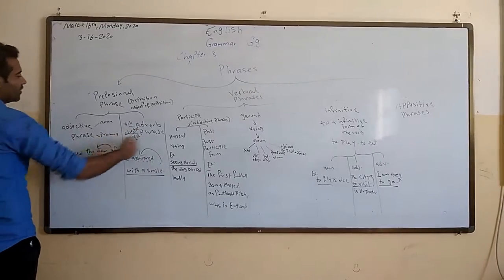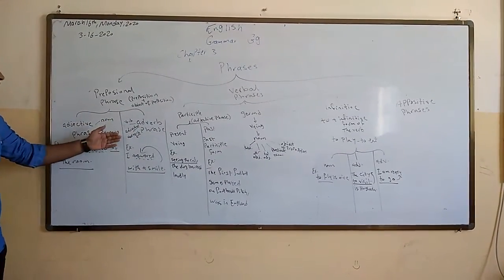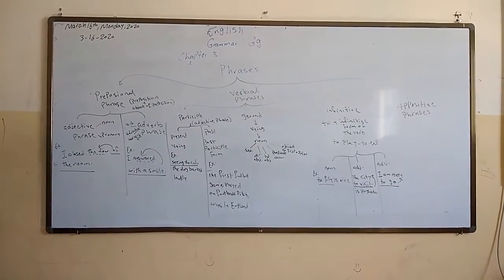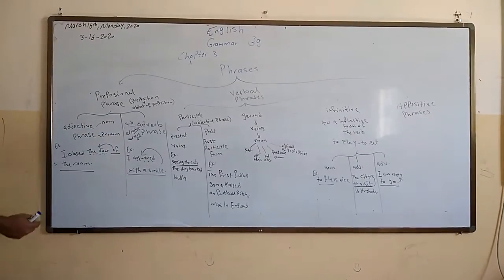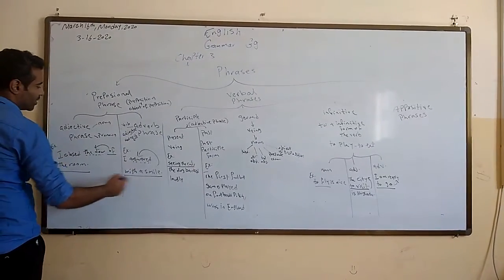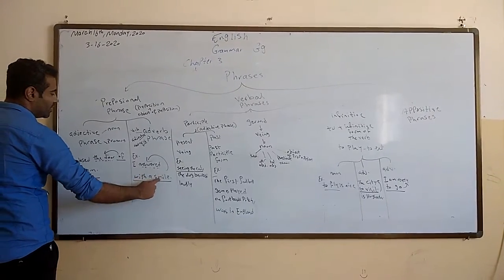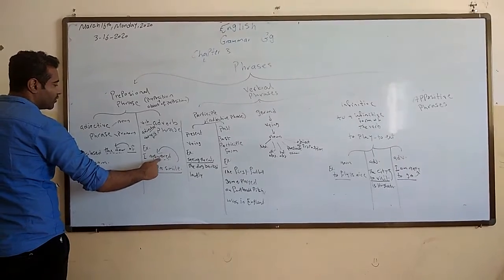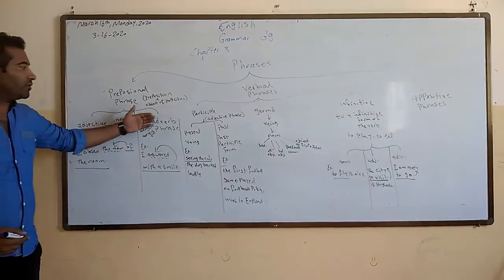The second function for the prepositional phrase is that it works as an adverb phrase. An adverb usually modifies the verb, adjective, or another adverb. So the adverb phrase function is to modify the verb, adjective, or adverb. For example, 'I answer with a smile.' The phrase 'with a smile' describes how I answer — it modifies the verb. So what kind of phrase is it? An adverb phrase.